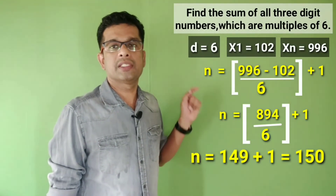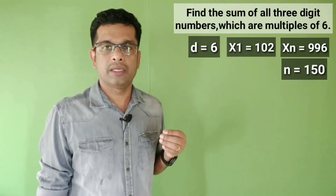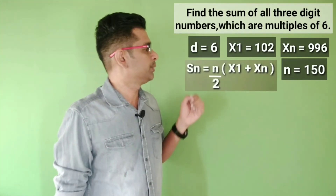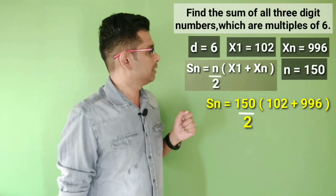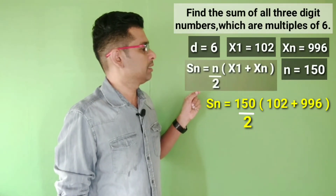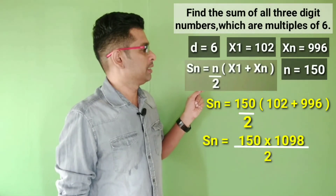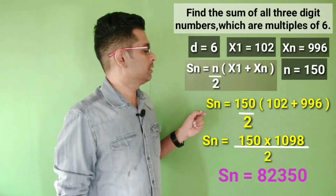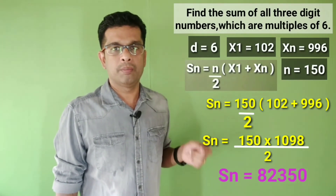Number of terms is 150. First term is 102, last term is 996. Applying the sum formula: sum equals n divided by 2 times x1 plus xn, which equals 150 divided by 2 times 102 plus 996. That gives 2098 divided by 2, equals 82,350. The sum of all three-digit multiples of six is 82,350.